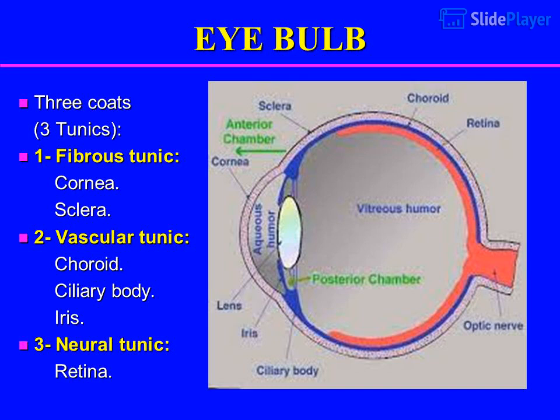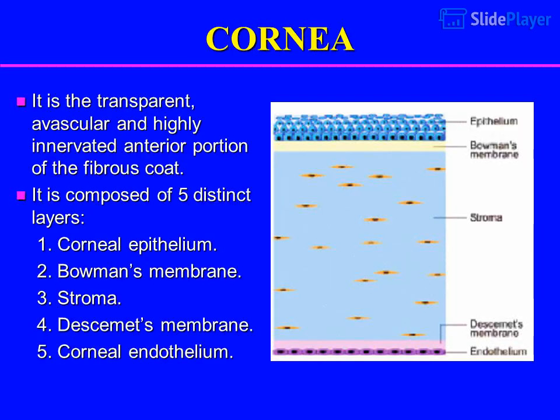The fibrous tunic includes the cornea and sclera. The vascular tunic includes the choroid, ciliary body, and iris. The neural tunic is the retina. Cornea: it is the transparent, avascular, and highly innervated anterior portion of the fibrous coat.